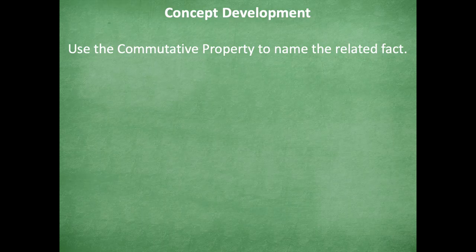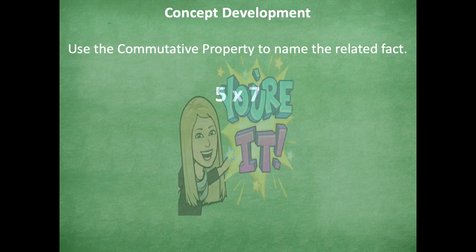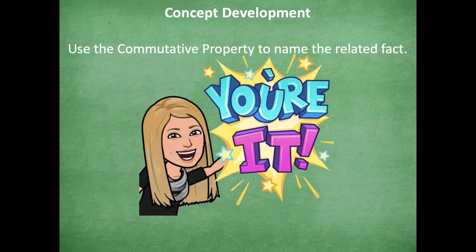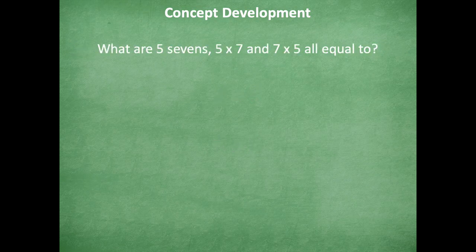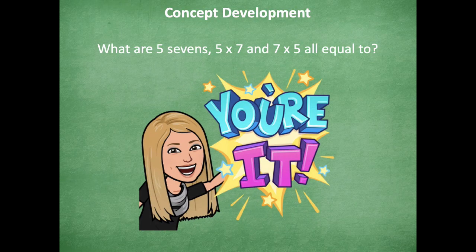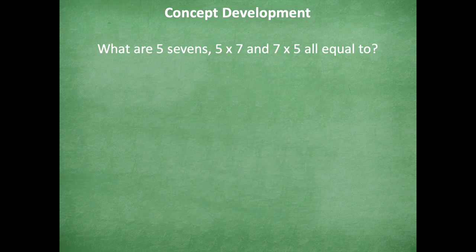So let's use the commutative property to name the related fact. If I know five times seven, what would it be when we flip-flop it using the commutative property? The related fact to five times seven would be seven times five. So five times seven and seven times five — what are they all equal to? Five sevens, seven times five, and five times seven are all equal to 35.